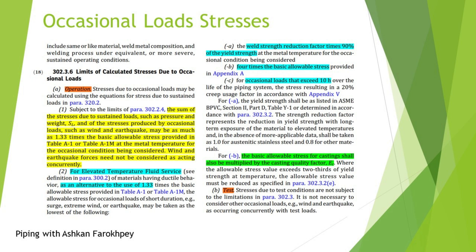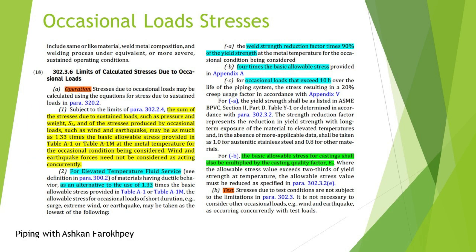Now let's go to the final step — the limit for occasional load stresses. As stated in section 302.3.6 of ASME B31.3, we need to analyze occasional loads during operation, not during testing. The code expresses that there is no need to consider occasional loads such as wind or earthquake during test. When calculating the occasional loads, the sum of stresses due to sustained loads such as pressure and weight, and stresses produced by occasional loads such as wind or earthquake, may be as much as 1.33 times the basic level of stress provided in Table A1, at the applicable temperature for the occasional condition being considered.